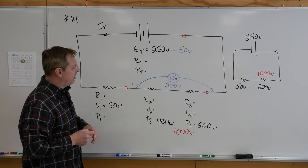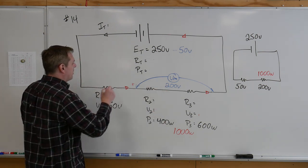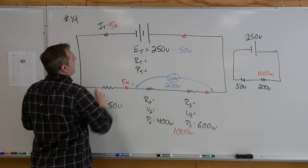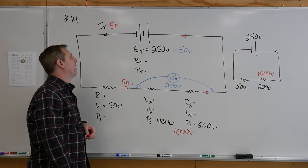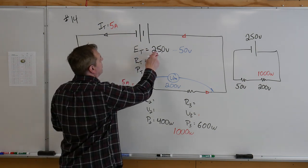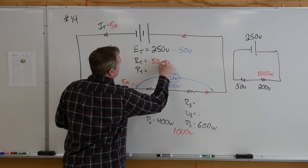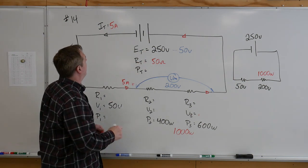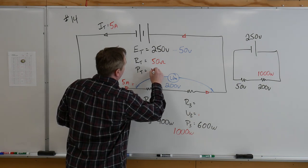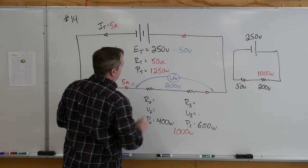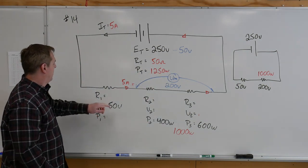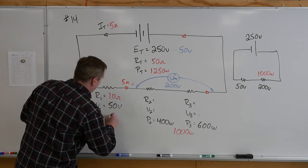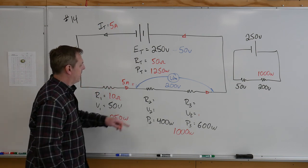So based on that, 1000 divided by 200 gives me a current here of 5 amps. And using that current we can quickly solve for everything else. So 250 divided by 5 will give us 50 ohms as an R total. 250 times 5 will give me 1250 watts. 50 divided by 5 gives us 10 ohms here, 50 times 5 will give us 250 watts here.